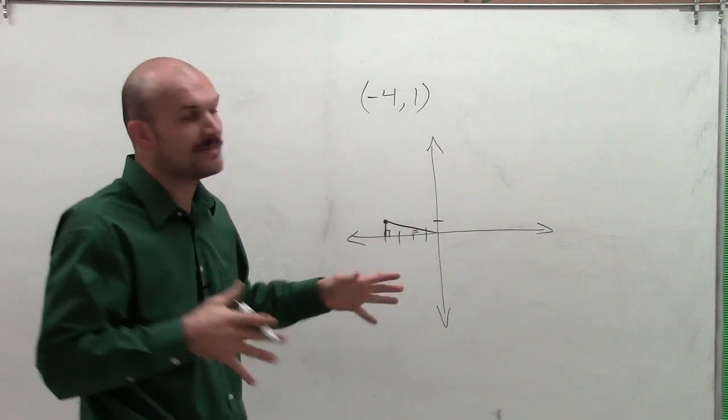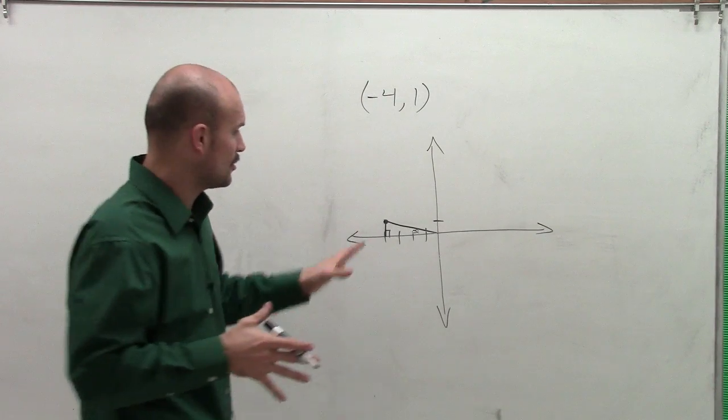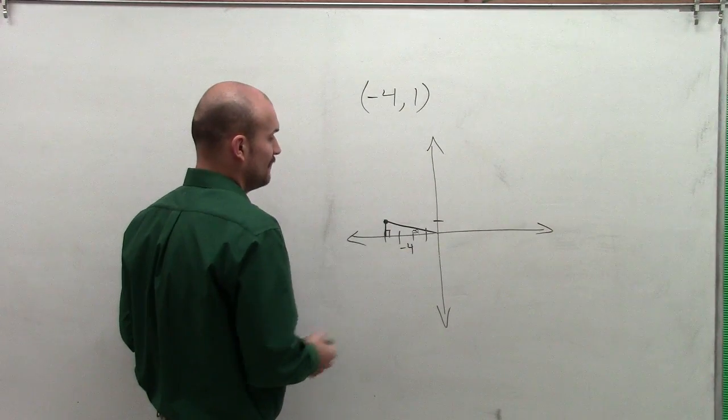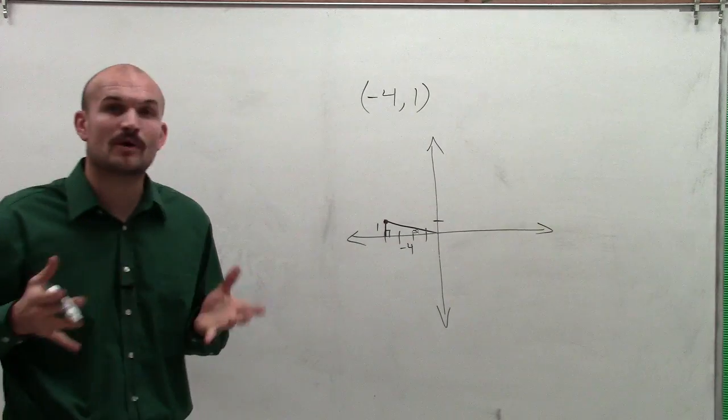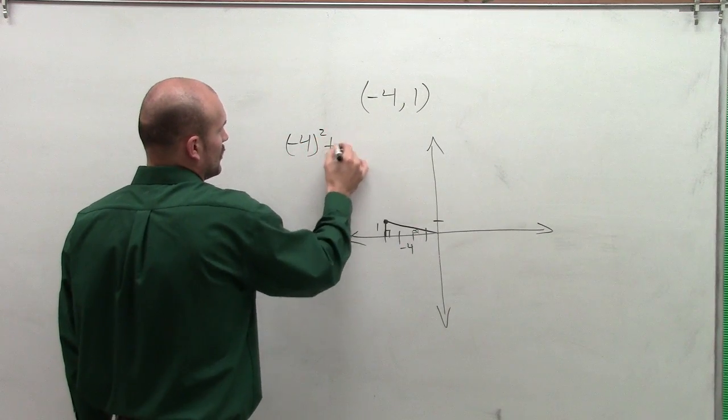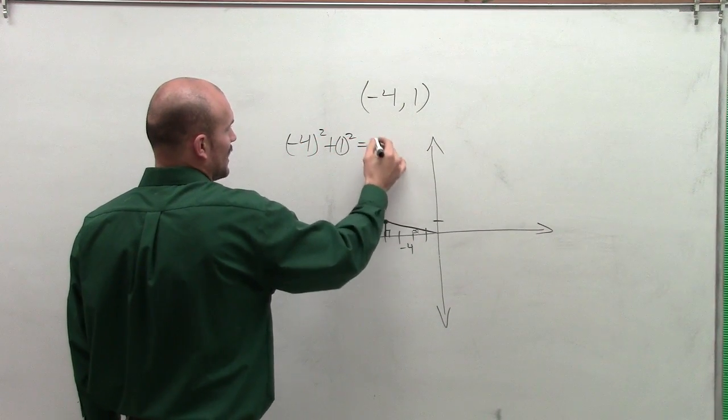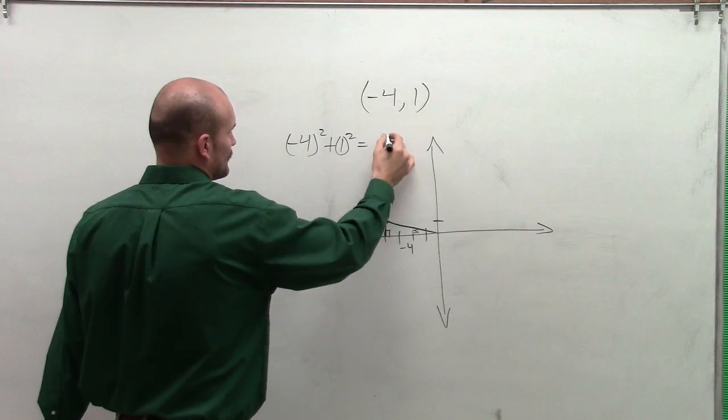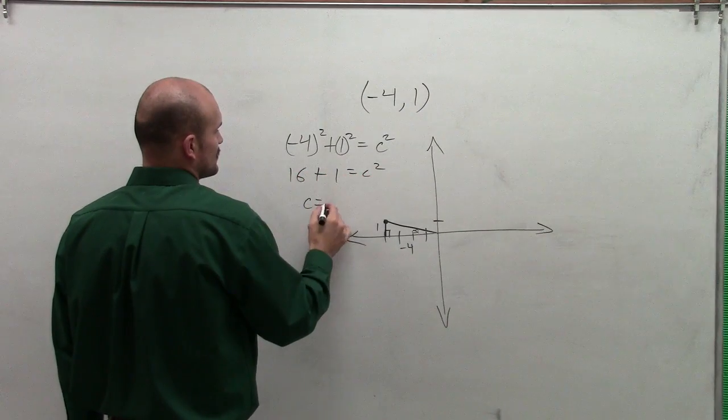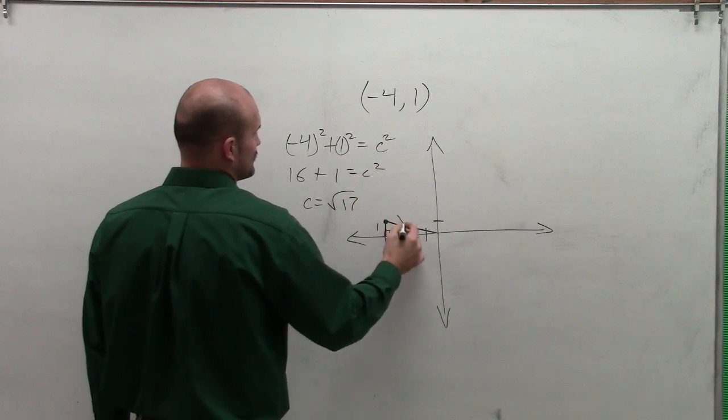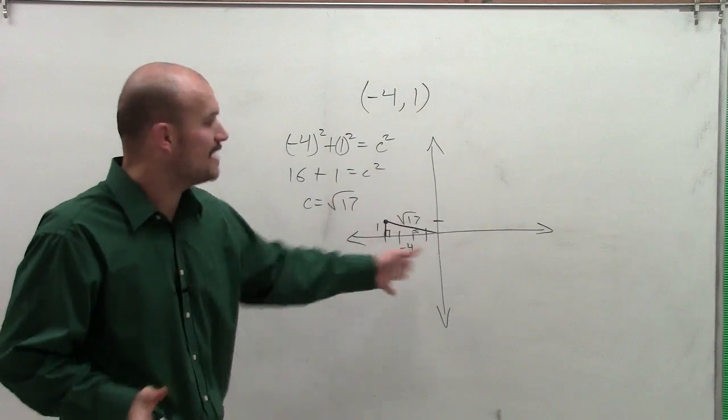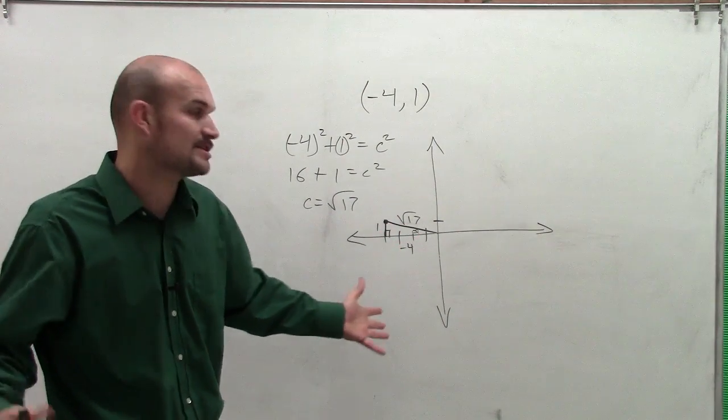Now I can use my Pythagorean theorem to figure out the rest of my triangle. I know that my length here is -4, and my height is 1. Now I need to determine what my hypotenuse is. My leg squared plus my other leg squared is going to equal my hypotenuse squared, which we'll call c. So I have 16 + 1 = c². So c is going to equal the square root of 17.